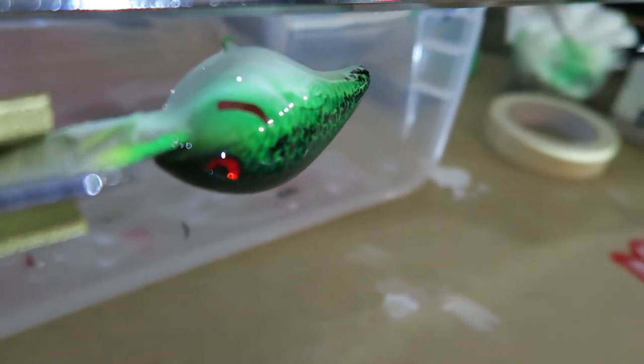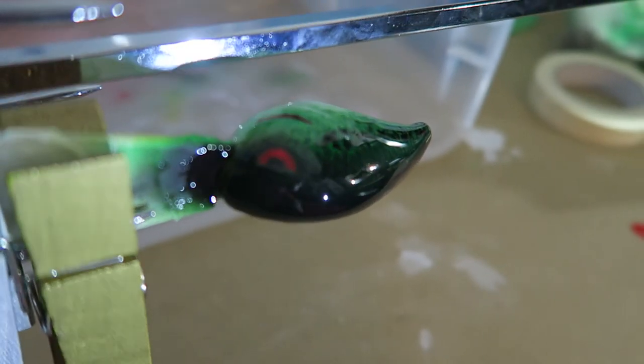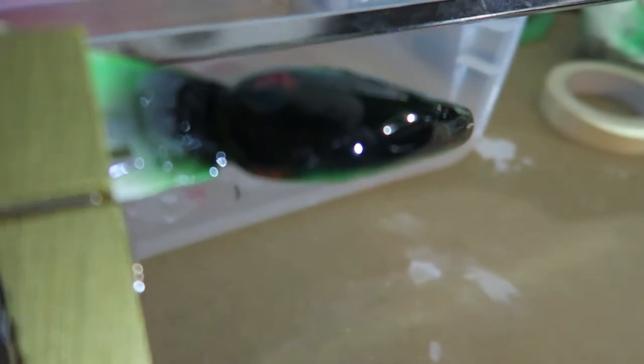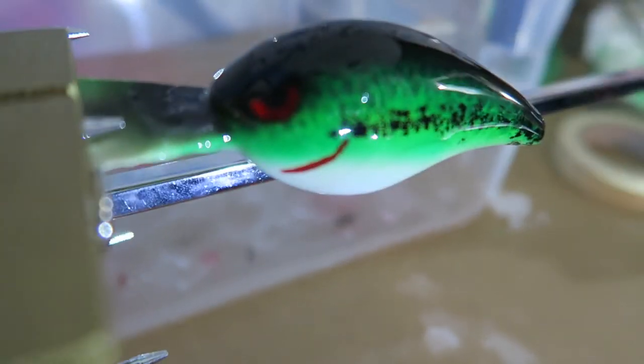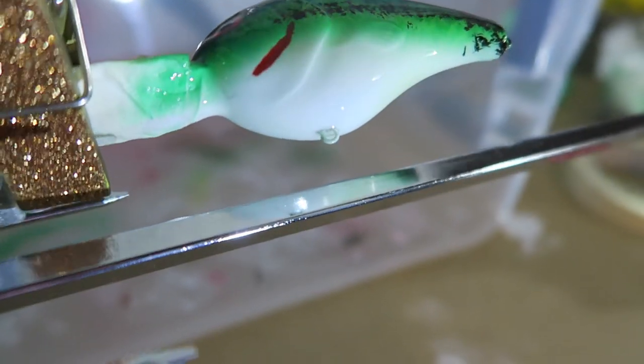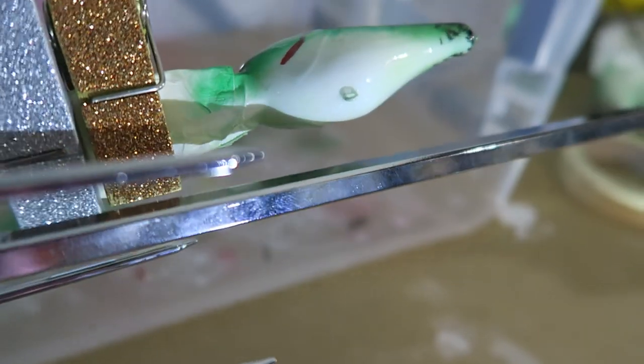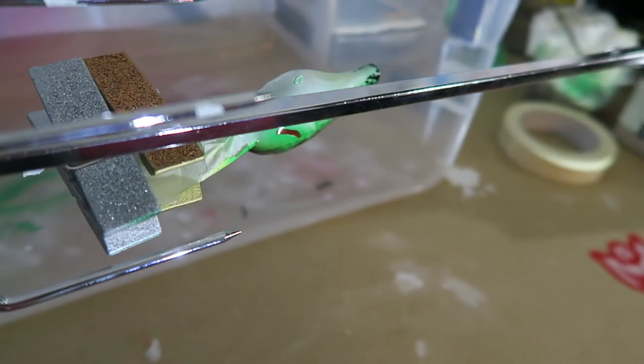But a lot of people use it just for this same reason I'm using it for. Basically it just spins your lure around after you put the epoxy on it so the epoxy doesn't pull on one side. It makes everything even on the lure because it's spinning around.